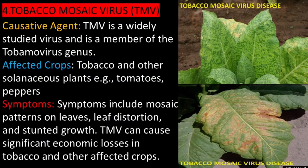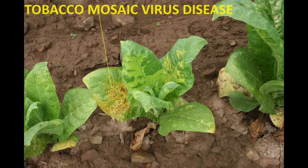Tobacco Mosaic Virus (TMV) is a widely studied virus and a member of the Tobamavirus genus. Affected crops include tobacco and other solanaceous plants, such as tomatoes and peppers. Symptoms include mosaic patterns on leaves, leaf distortion, and stunted growth. TMV can cause significant economic losses in tobacco and other affected crops.